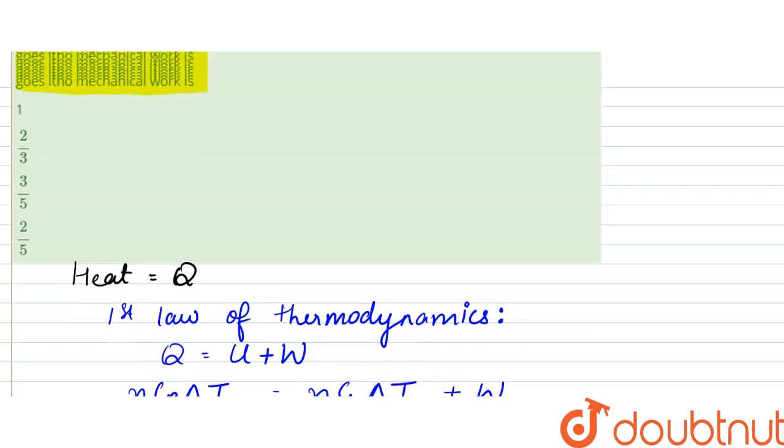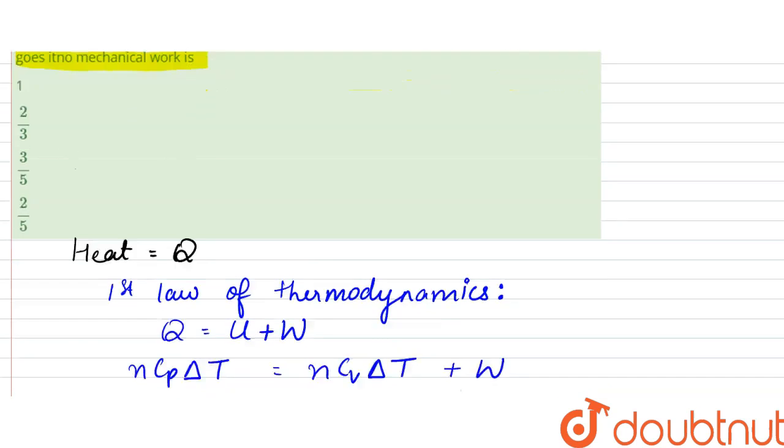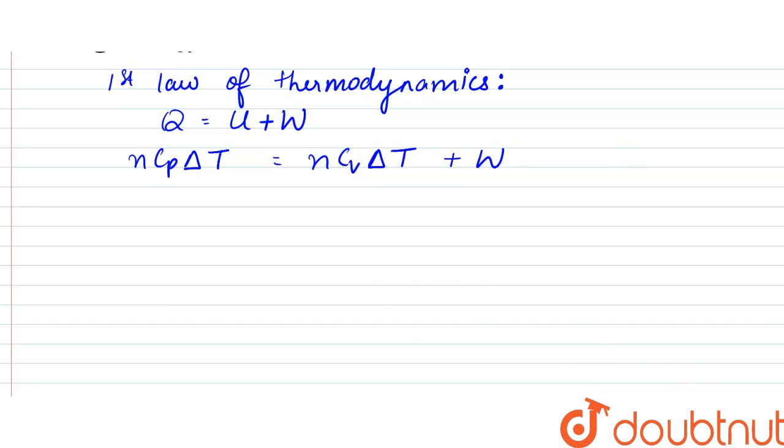What we have to find is the fraction of heat that goes into mechanical work. So we have to find w by q. That would be equal to n cp delta t minus n cv delta t